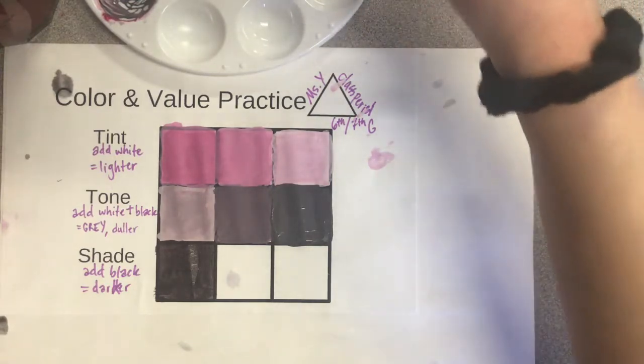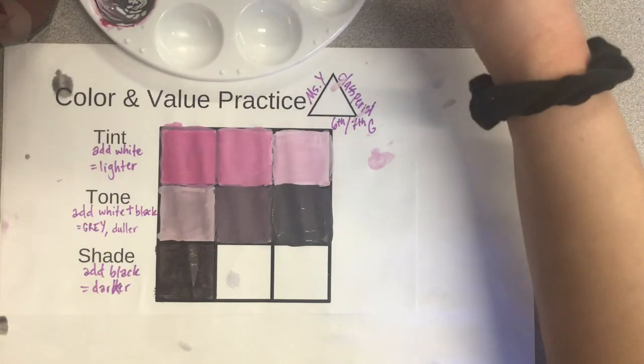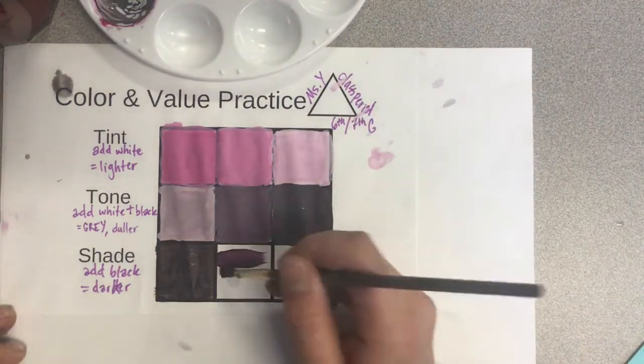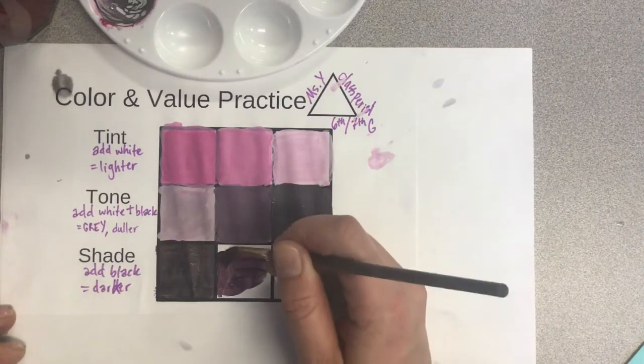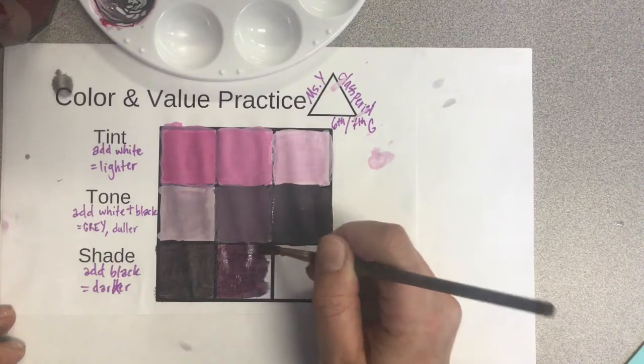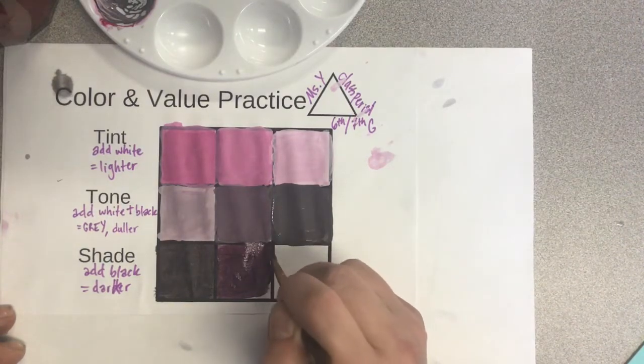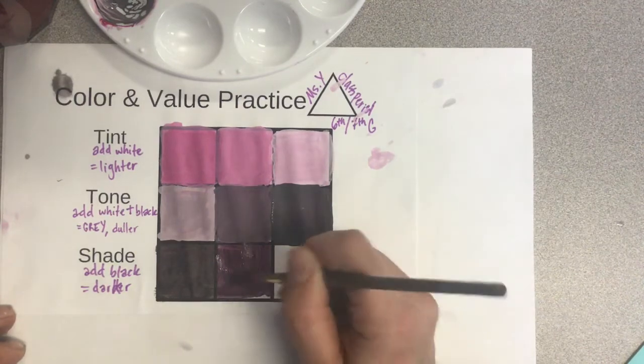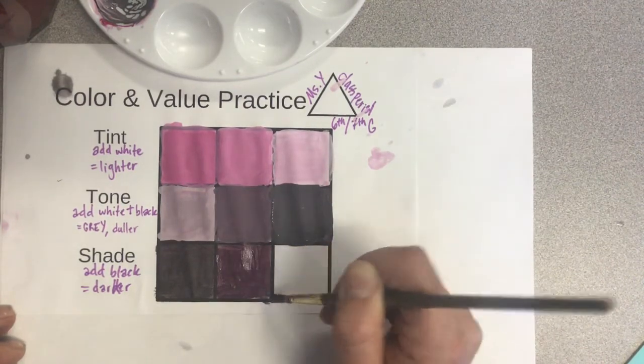You're going to be tempted to want to add white here to lighten it up, but remember that would be a tone, not a shade. Because a tone has white and black or gray, and a shade just has black. So to lighten up a shade, you just add the hue or color that you started with.